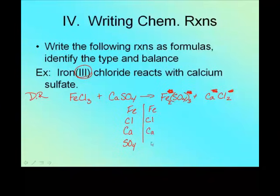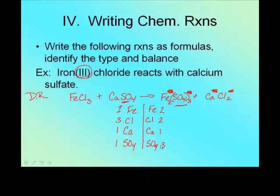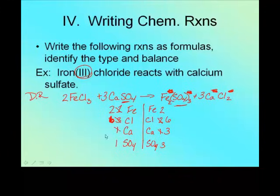Hopefully you get to the point where you don't need the line anymore, but until you're good at this, keep drawing it. Notice I kept my sulfate together — sulfate doesn't change from left to right, so I can keep it intact. Counting atoms: one iron, three chlorines, one calcium, one sulfate on the left; two irons, two chlorines, one calcium, three sulfates on the right. Start with the non-metals — chlorine: I've got three and two, common denominator is six. That gives me six chlorines and three calcium. For the two irons on the right, that balances out. Three calciums over here — put a three — and the sulfates balance too. Done.